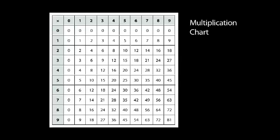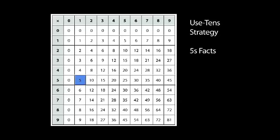Well, if we look at our chart, our multiplication chart, we started off with working with the fives — the use-10 strategy with the fives — so we did that row and that column, which is the turnaround.